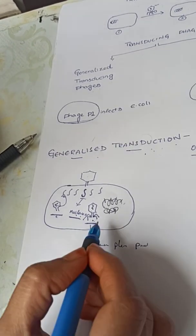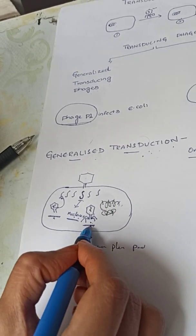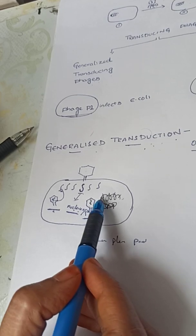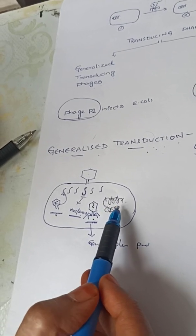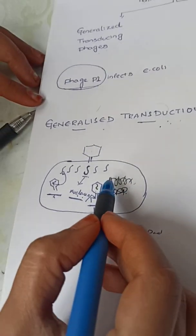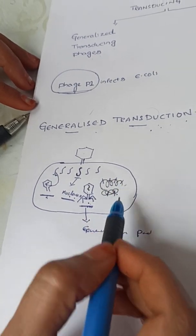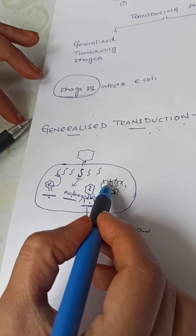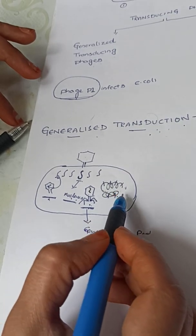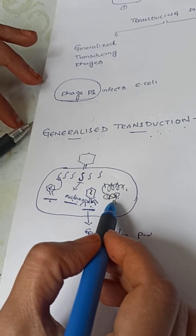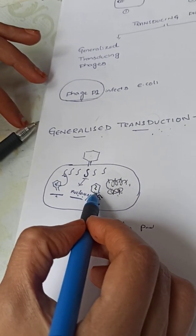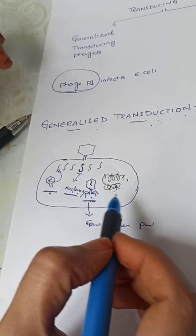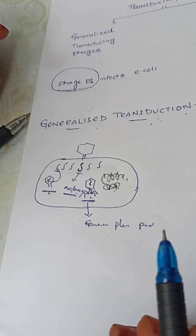Why do we call this a generalized phage particle? Because the bacterial genome can be cleaved into many fragments, and any of these pieces of DNA have the chance to get packed inside the viral protein coat. Hence we call this generalized transduction.